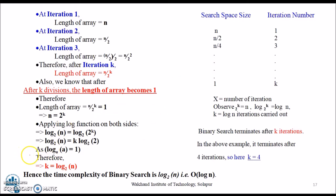Therefore, the length of the array at iteration k gives us n/2^k = 1, that is, n = 2^k. Applying the log function on both sides, log base 2 of n equals log base 2 of 2^k, which gives k = log₂(n). At each iteration, the search space gets divided by 2 until k reaches 1, and x equals the number of iterations. Therefore, binary search terminates after k iterations. In the above example, k was equal to 4. Hence, the time complexity of binary search is O(log n).